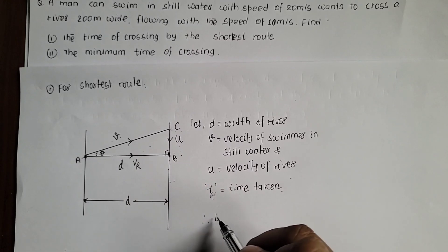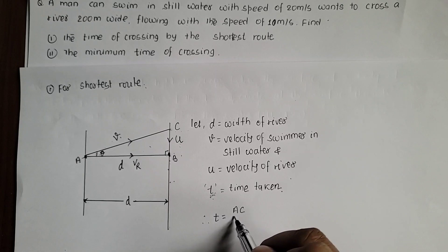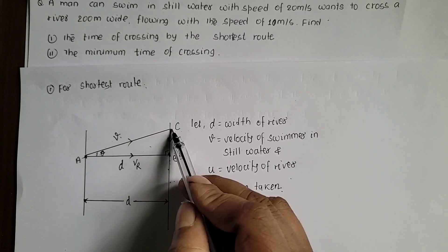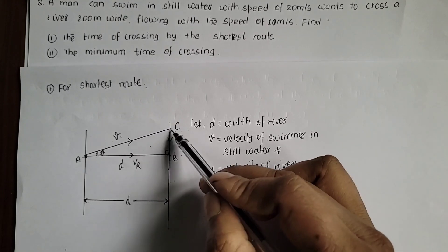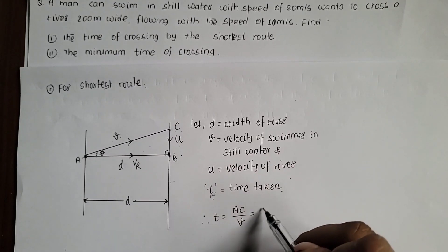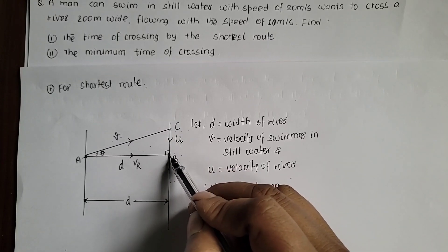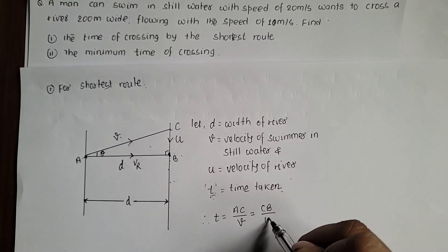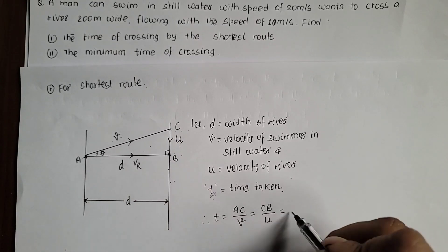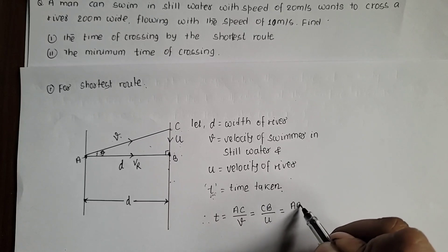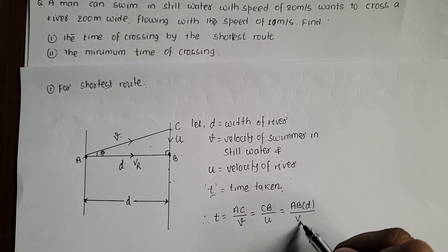Therefore, by equating: time = distance divided by corresponding velocity. So time equals AC divided by V (swimmer's velocity) equals CB divided by U (river velocity) equals AB divided by Vr (resultant velocity). AB is the width of the river D. This relation gives us the time and also allows us to find Vr.